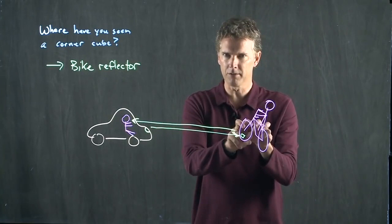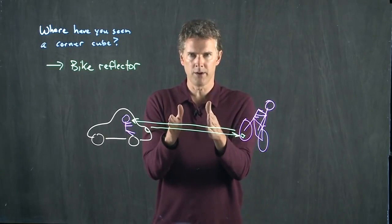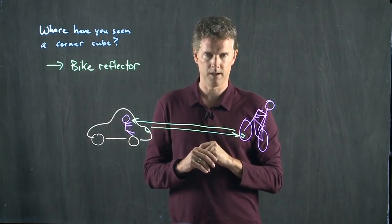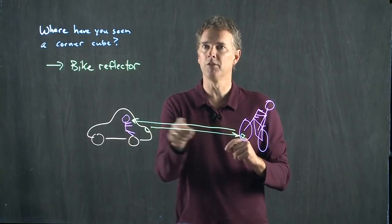It's kind of weird when you think about you're in your car. If somebody is in the car next to you, and they have their headlights off, they can't see the bike reflector. Only you can see the bike reflector, because those headlights are coming straight back to you. They're not going to other people. They're coming straight back to you.